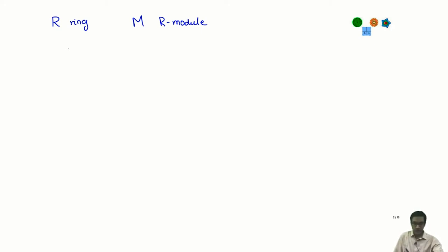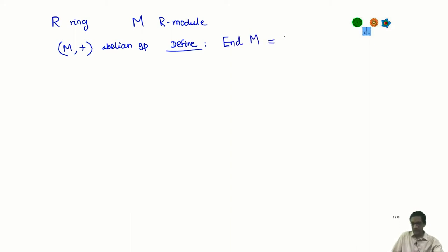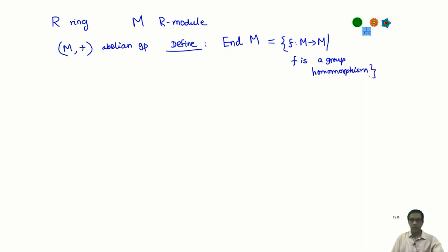Let us first make some observations. If M is an abelian group, recall M with + is an abelian group. Let me define something called End(M), where End stands for endomorphisms — homomorphisms from the group M to itself. So End(M) is the set of all f from M to M such that f is a group homomorphism. The key observation is that this set End(M) actually has some additional structure.